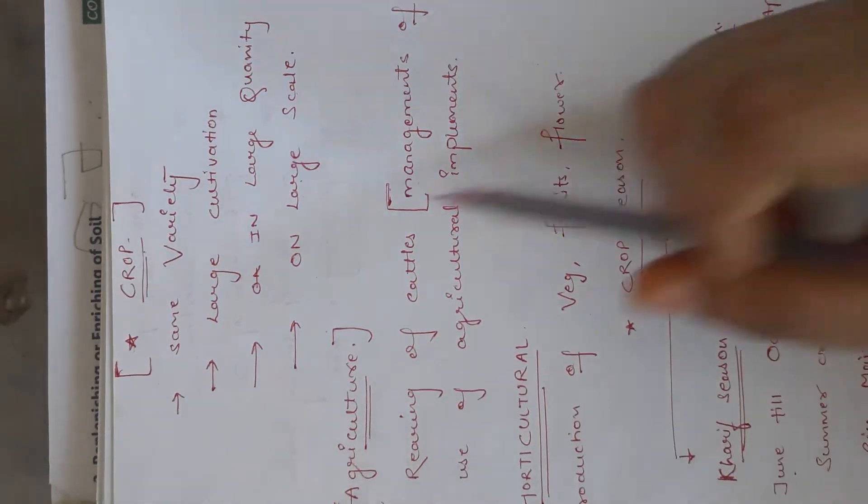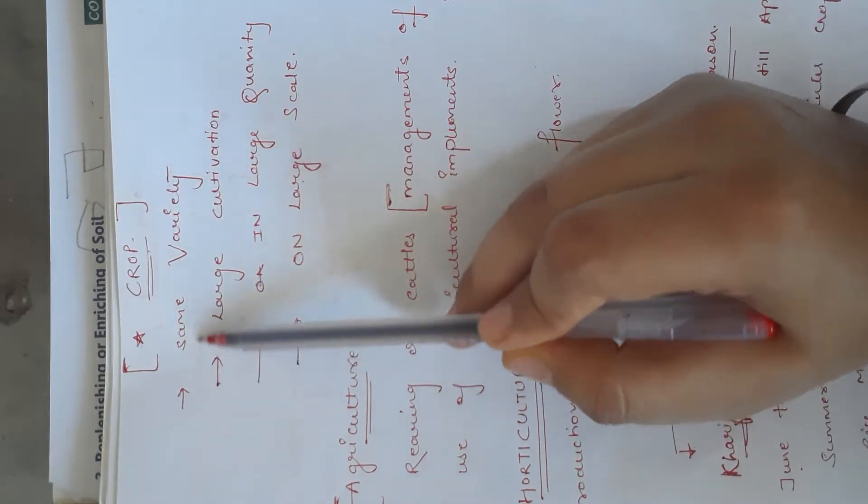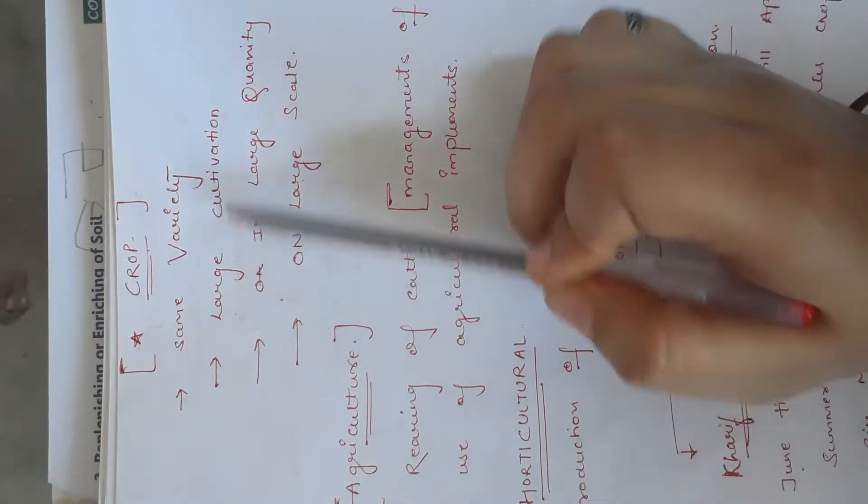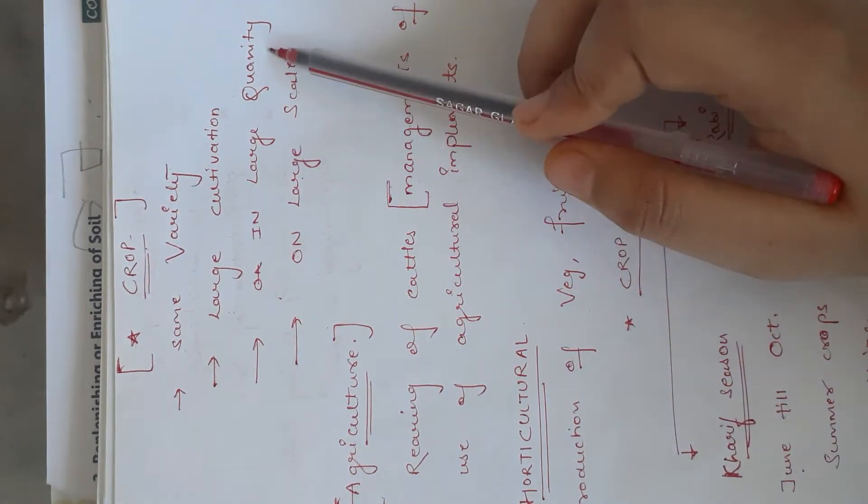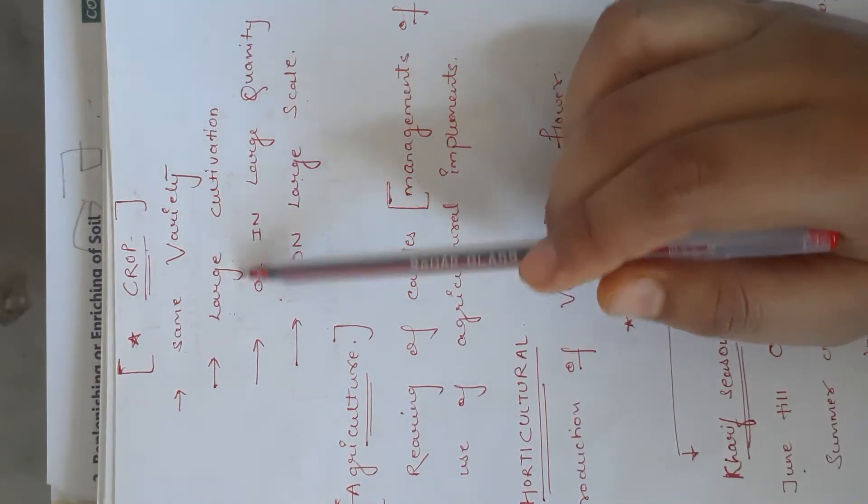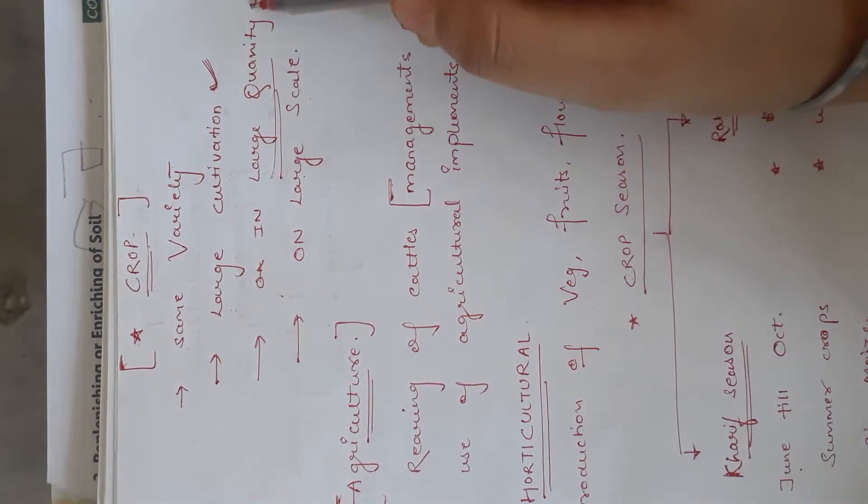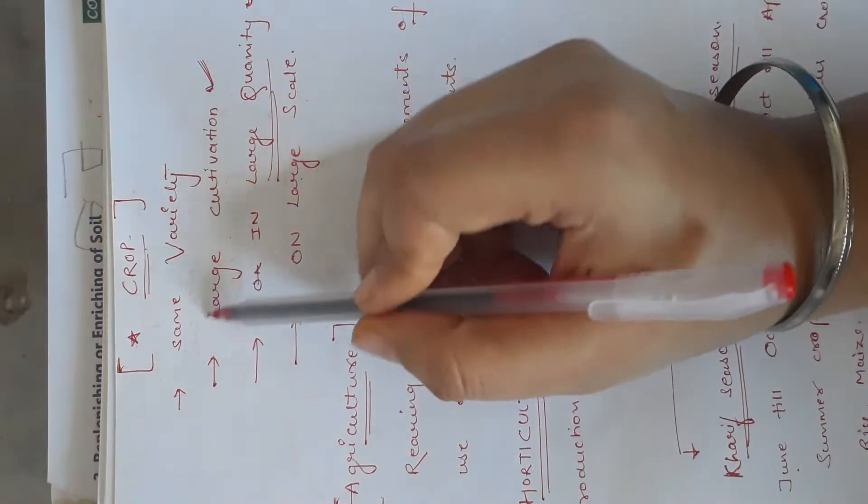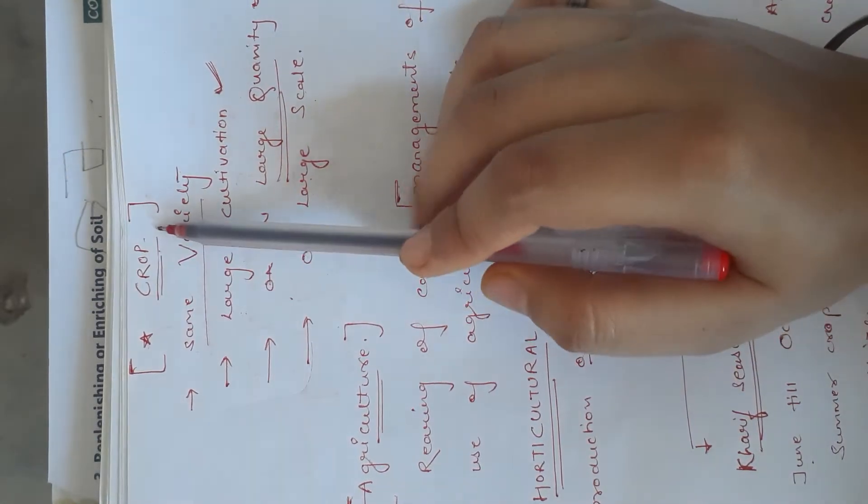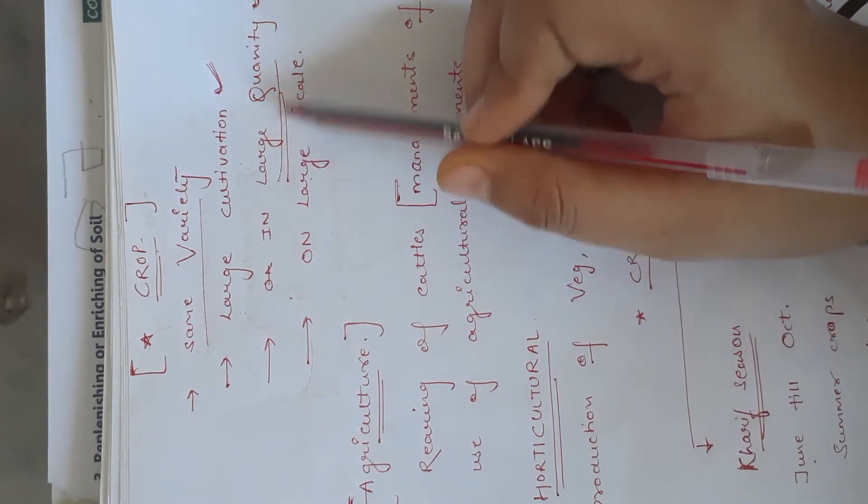First, crop. What is a crop? Same variety of plants with large cultivation in large quantity on a large scale. It means same variety of plants which are cultivated in a large quantity area. You know that crops need large cultivation, so it needs large space, large quantity, large area.